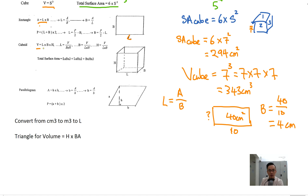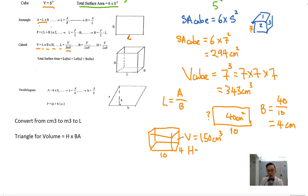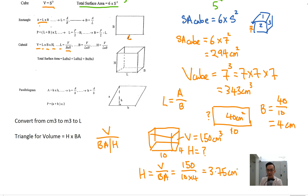The cuboid is more important. Volume is still length times breadth times height. If you want to find any one of the length, breadth, or height, you take the volume divided by the other two sides. A common question sounds like this: given a cuboid of 10 cm and 4 cm with volume 150 cm³, what is the height? Using the triangle, height equals volume divided by base area equals 150 divided by (10 times 4) equals 3.75 cm.